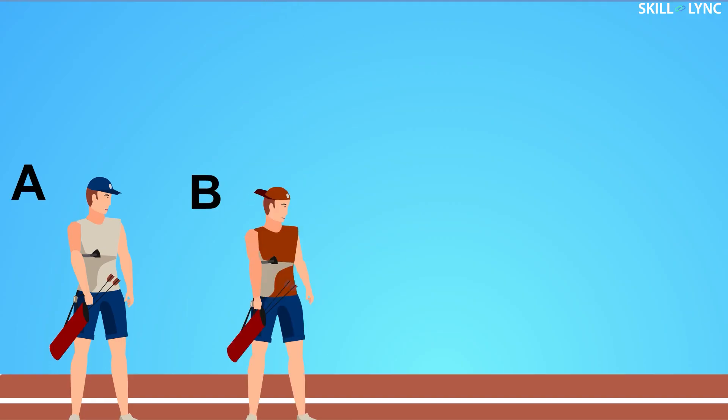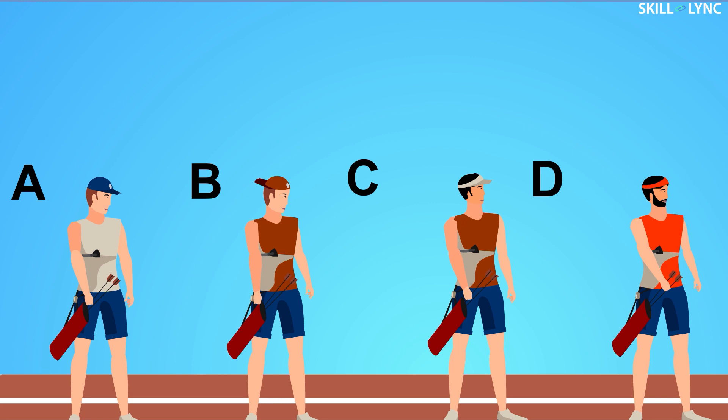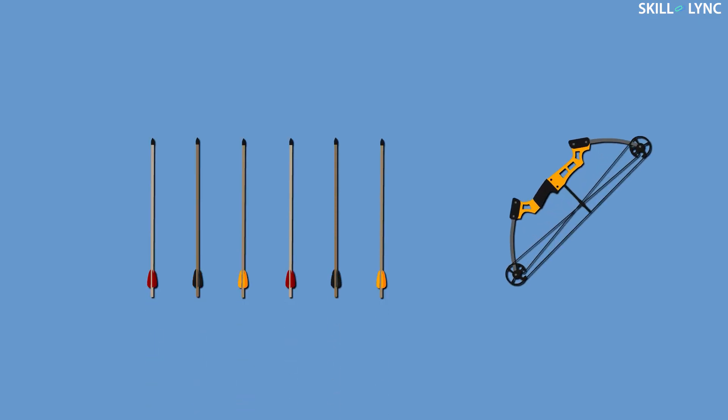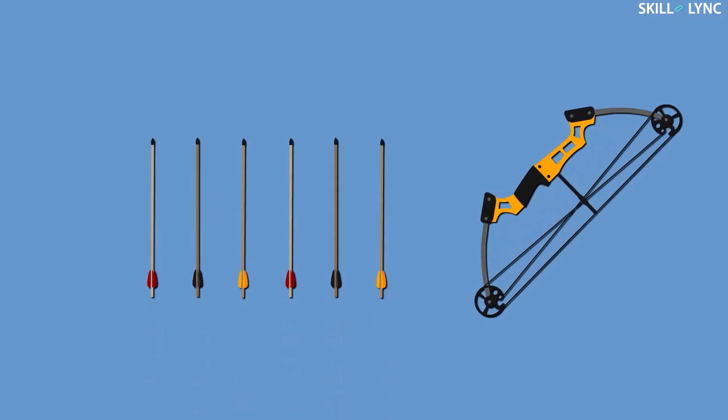Let's say that there is an archery competition. Many people from far and wide have come over to attend the competition. The participants are all busy shooting arrows at the target. But one specific round interests us. Four people — A, B, C and D — are facing off each other. Each person has to shoot a total of six arrows to finish the round.